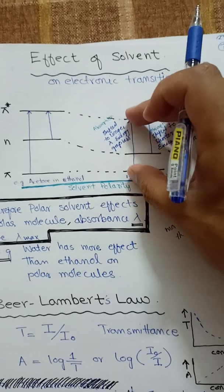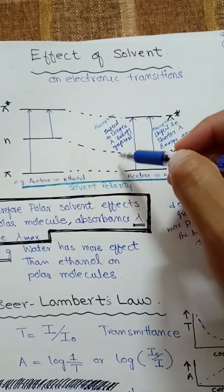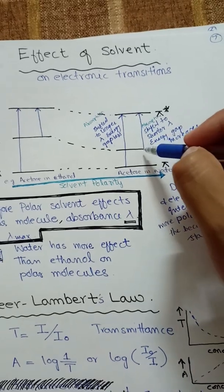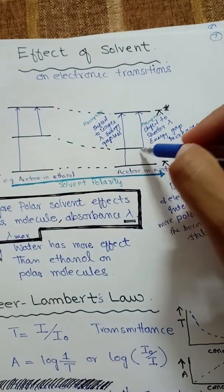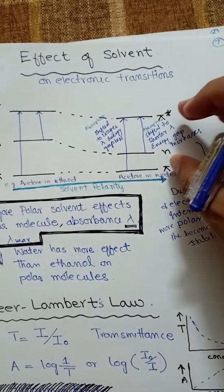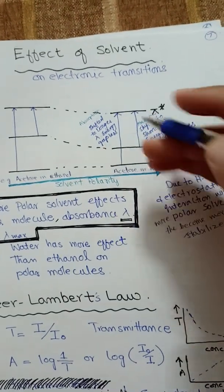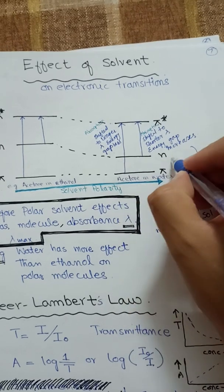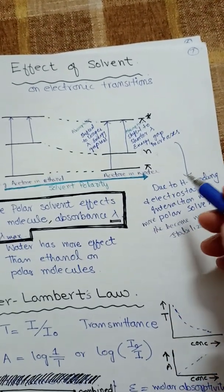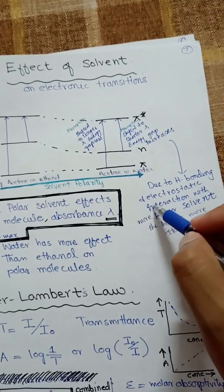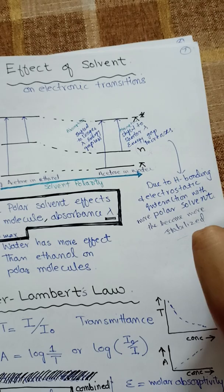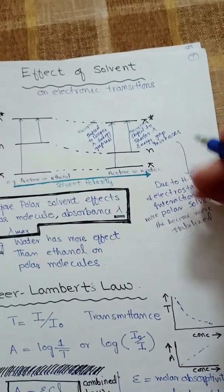When the pi-to-pi* energy difference decreases, the molecule absorbs light of longer wavelength (bathochromic shift). In contrast, for n-to-pi* transitions, the energy difference increases because the non-bonding energy level is stabilized through hydrogen bonding or electrostatic interactions with the polar solvent. As the n level is lowered in energy, higher energy (shorter wavelength) light is required — a hypsochromic shift.